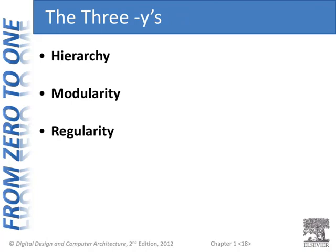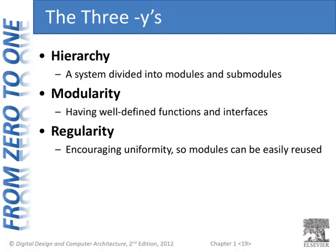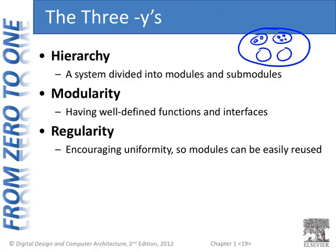The first Y is hierarchy. Hierarchy is a system divided into modules and submodules. For example, a house is built of submodules like rooms — the kitchen, the bedroom, the den, the family room. And even these rooms may have submodules: the bedroom may have a closet and a built-in bathroom. So hierarchy is a system that has modules — larger systems — and within those, submodules, and even within those submodules, lower levels of hierarchy: sub-submodules, and so on.